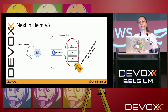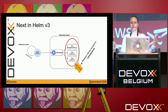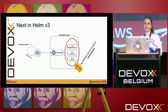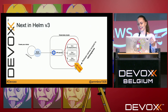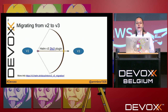Release names in Helm 3 are no longer scoped to the namespace where Tiller was running — because Tiller no longer exists. This means the same release name can now be reused across namespaces, which is a feature many people wanted. There was a long GitHub issue discussing exactly this.